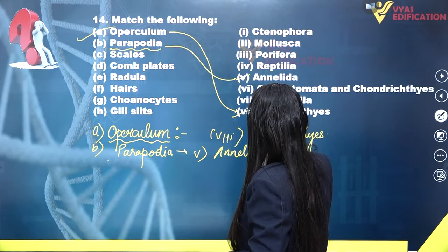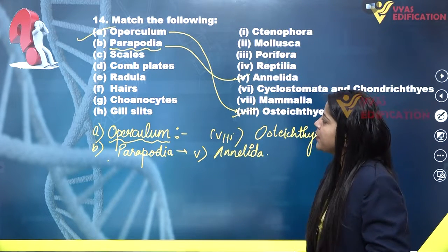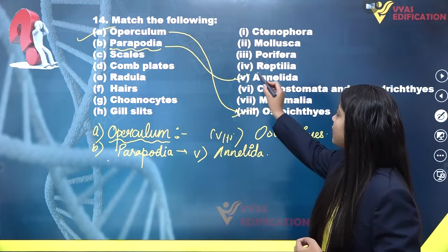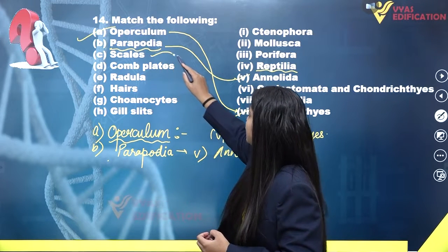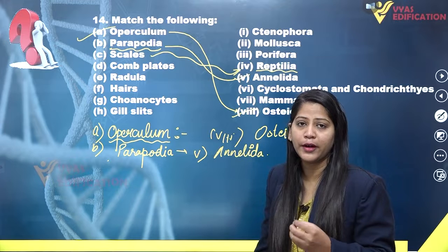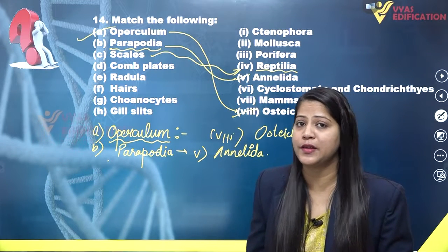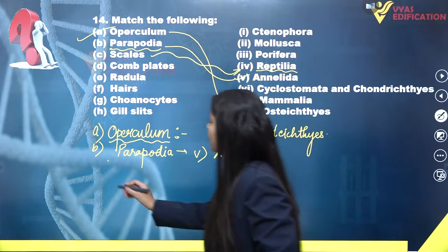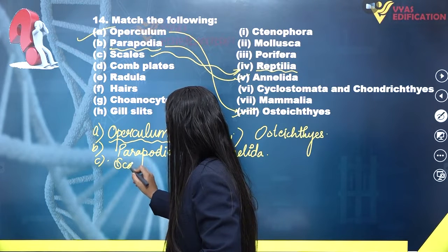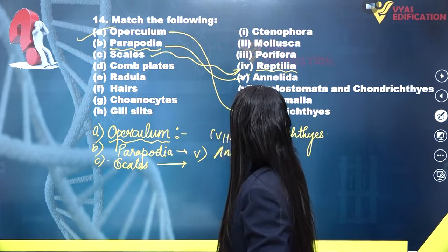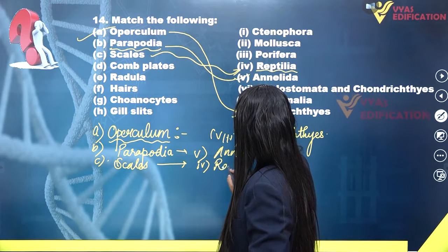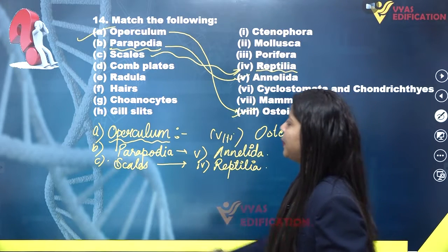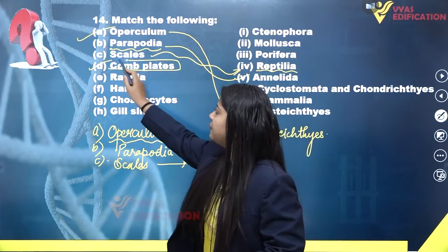Next, scales are found in Reptilia. Reptilians are terrestrial animals included in the superclass Tetrapoda. They have scales on their body, which is a characteristic feature. So scales will match with the fourth option, Reptilia, which is a class.